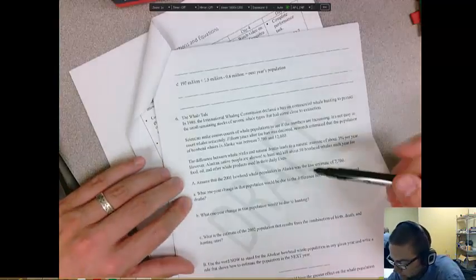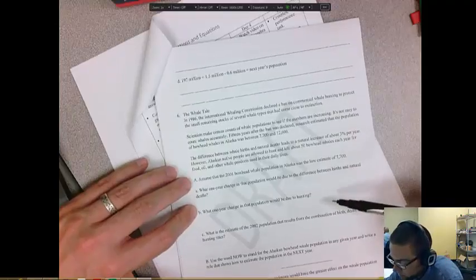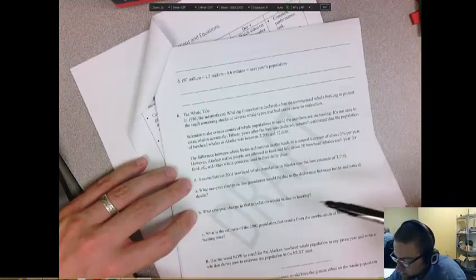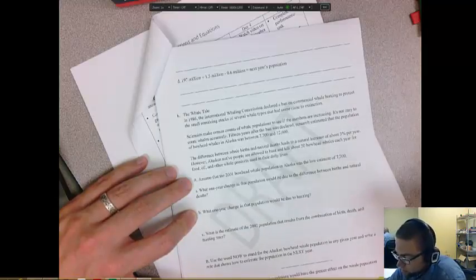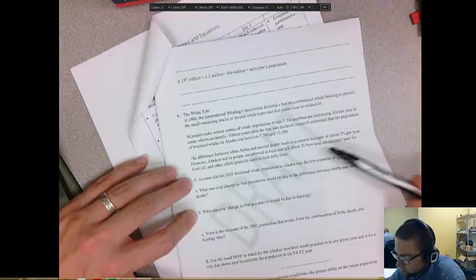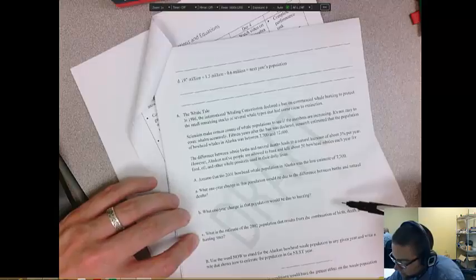But the Alaskan native people were allowed to hunt 50 bowhead whales each year for food, oil, and other whale products for their daily lives. So then you're going to use this information to set up a mathematical model and determine what's the one-year change in population. So it's increasing by 3%, but then you subtract away 50 whales because the Alaskan natives kill 50.